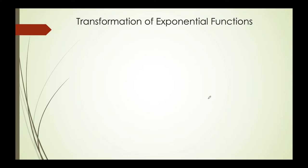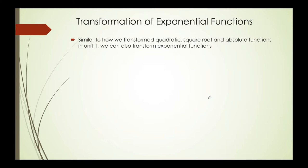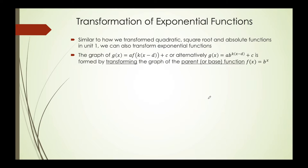What happens if we start transforming this exponential function? Luckily, a lot of the transformations that we apply to parabolas, square roots, and absolute value functions will be the same for exponential functions. The one big difference we notice is that we do not have just one parent function — we actually have multiple parent functions. What we notice is that if we start adding on the a, k, d, and c variables in the exponential equation, we will start transforming our graph from the base function b to the x.